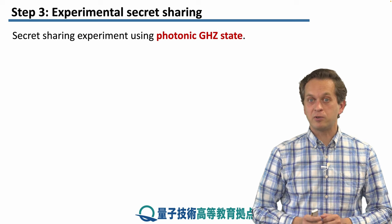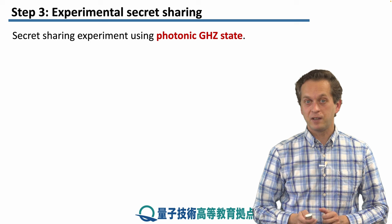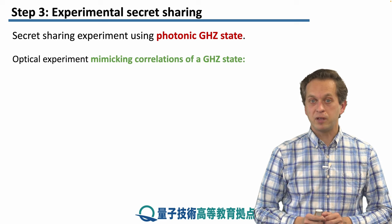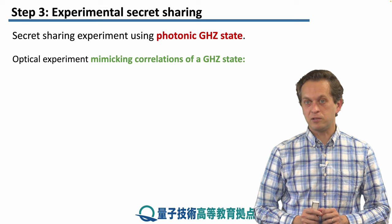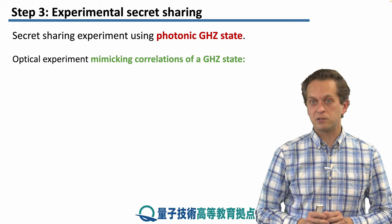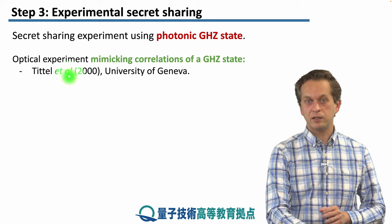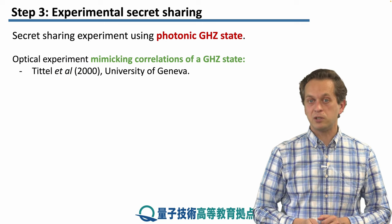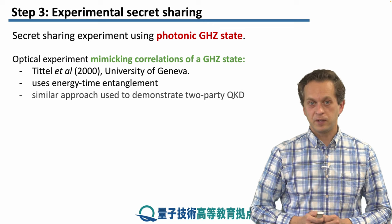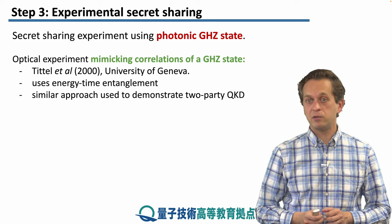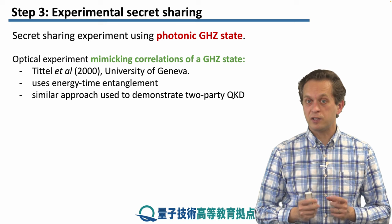Now let's return to experimental secret sharing and discuss how it was demonstrated in a laboratory. In that experiment, a photonic GHZ state was created — or more precisely, a state that mimicked the correlations of a GHZ state. The experiment was carried out by Wolfgang Tittel and his collaborators in the year 2000 at the University of Geneva, using a form of entanglement known as energy-time entanglement, which had previously been used to demonstrate two-party QKD.